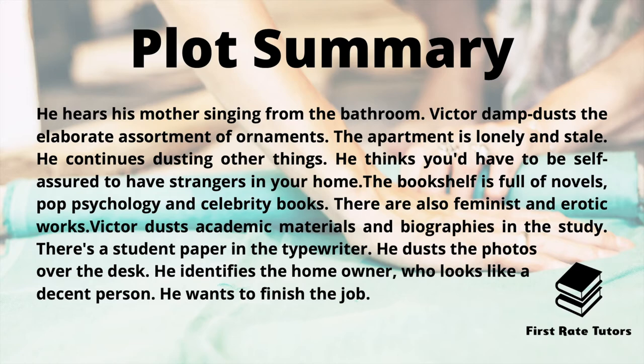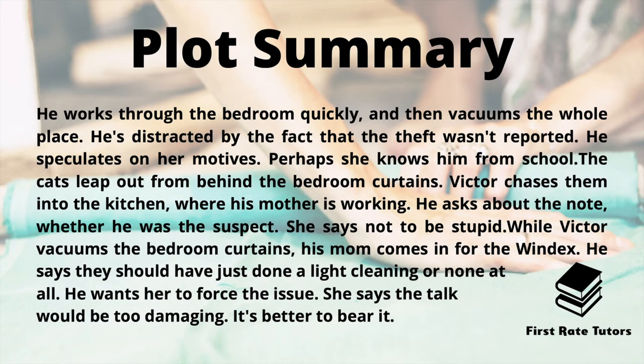Victor identifies the homeowner from photos and she looks like a decent person, though he seems really impatient to finish the job. He works through the bedroom quickly and vacuums the whole place, distracted by the fact that the theft wasn't reported, and he speculates on the client's motives — perhaps she knows him from school. The cats leap out from behind the bedroom curtains and Victor chases them into the kitchen where his mother is working. He asks about the note and whether he was a suspect, and she says that's a very silly question. While Victor vacuums the bedroom curtains, his mum comes in for the Windex. He says they should have just done a light cleaning or none at all and wants her to force the issue, but she says that talk would just be too damaging for her reputation — it's better to bear this and walk away silently.